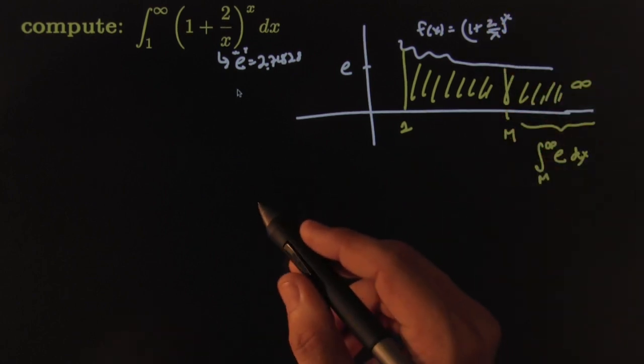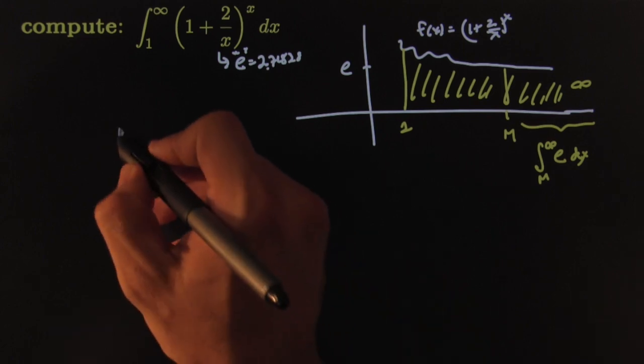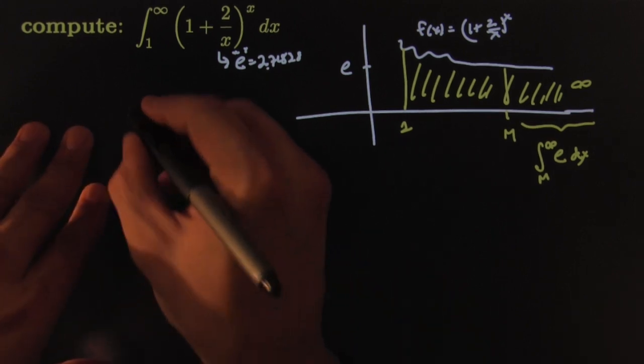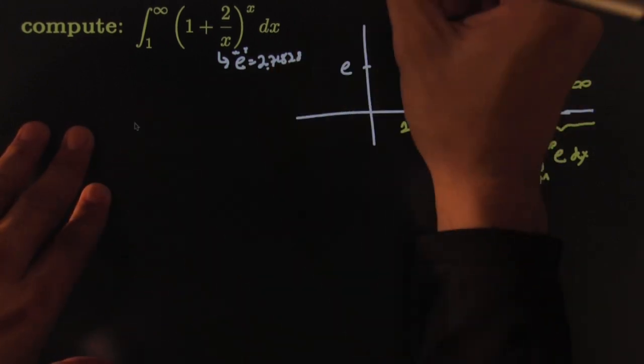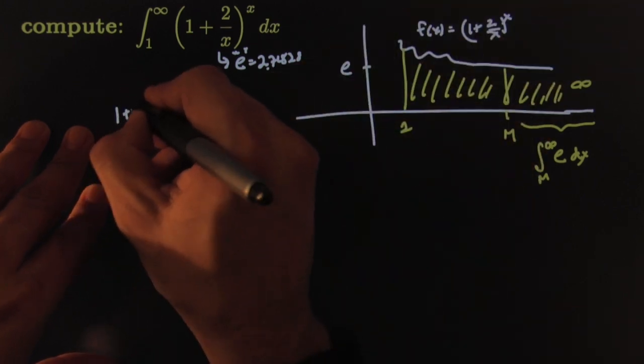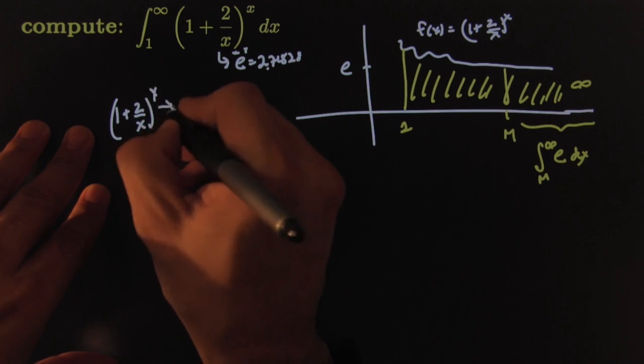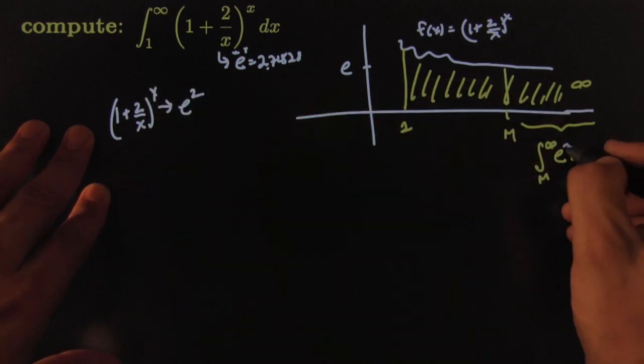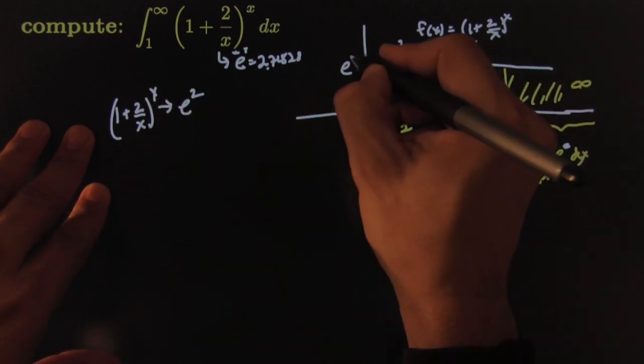So based on that, I can put it all together into a nice well-articulated thought: (1 + 2/x)^x goes towards e². I meant e² by the way, everywhere here, e².